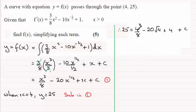So 4 cubed, well that's 64. 64 divided by 8, that gives us 8. So what we've got here is 25 equals 8, minus 20 times square root of 4 is 2, 2 times 20 is 40, plus the 4, plus the c. And I can see then that we've got minus 28 here. And if I add 28 then to both sides, I get c equals 25 plus 28, which is 53.